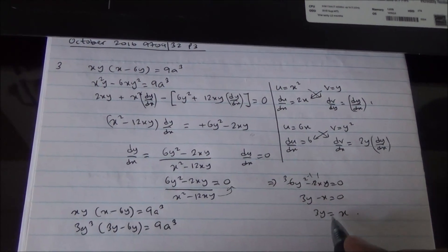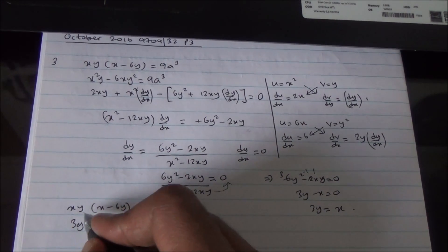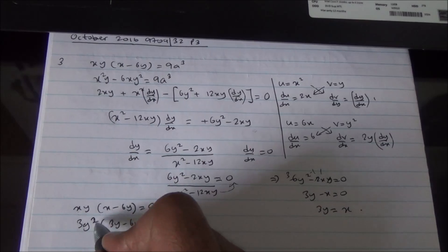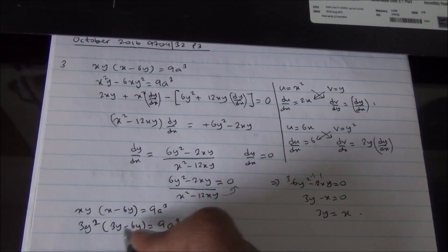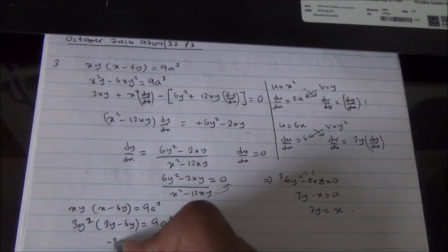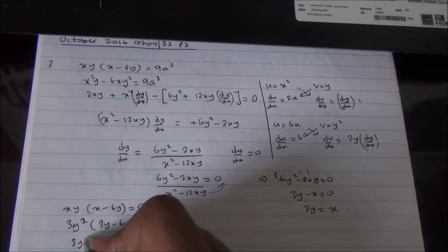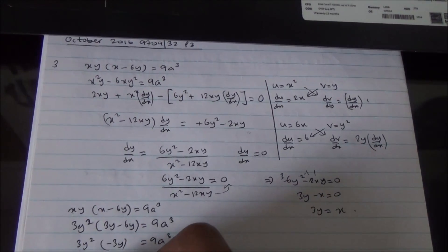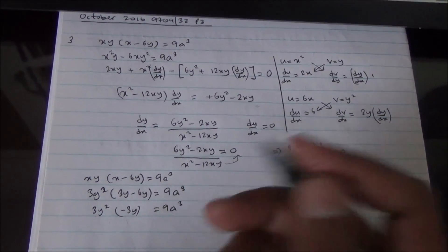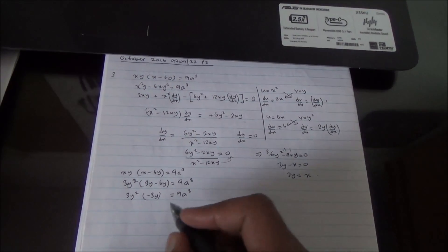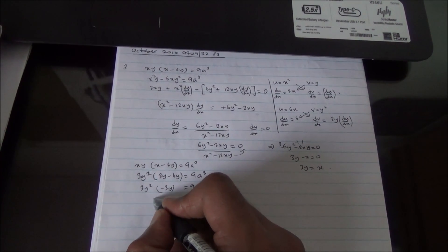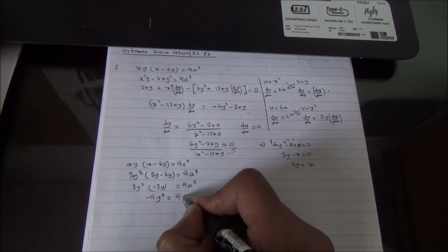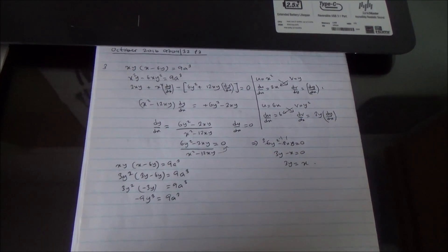Now, this was x is equal to 3y. So, 3y times y is 3y squared. 3y minus 6y is minus 3y. Times 3y squared, it's going to be 9a cubed. So, that's going to be minus 9y cubed is equal to 9a cubed.